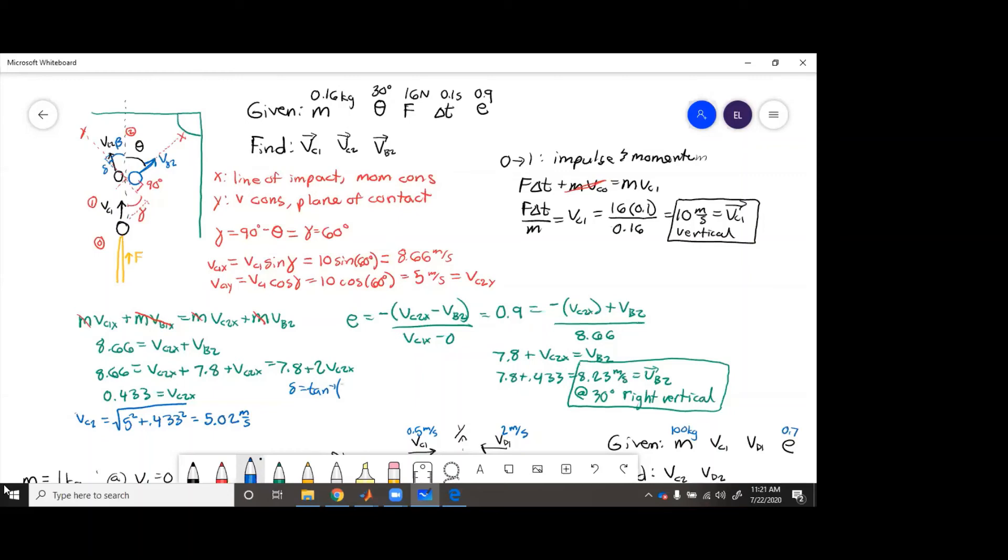So that's going to be tan inverse of 0.433 over 5 equals 5 degrees. And then beta equals 90 degrees minus theta minus delta equals 55 degrees. So vc2 is 5.02 meters per second at 55 degrees left of vertical.